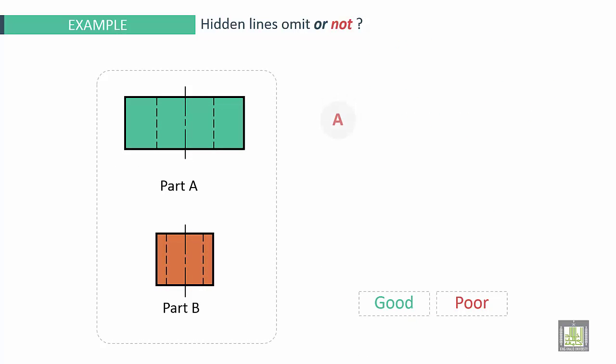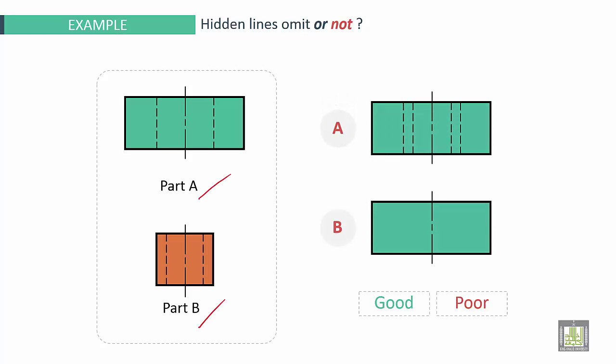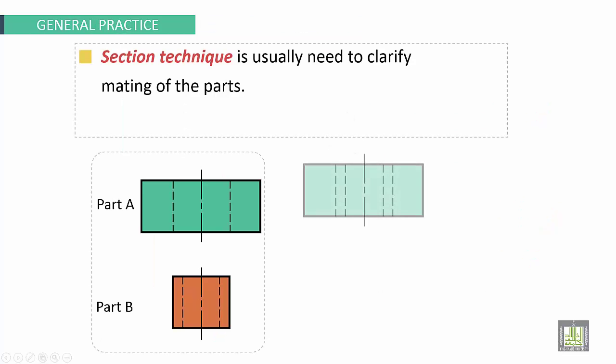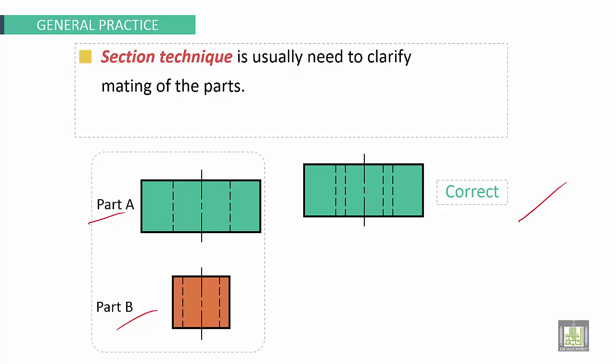Another example here for part A and part B. First example with A to be assembled like that, and B to be assembled like that. Which is better? So A it is better, B it is poor. Section technique is usually needed to clarify matting of the parts. Part A and part B, the same example. So like that it is correct. That one it's better.